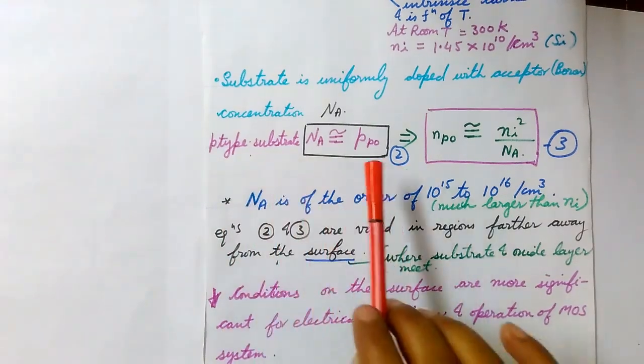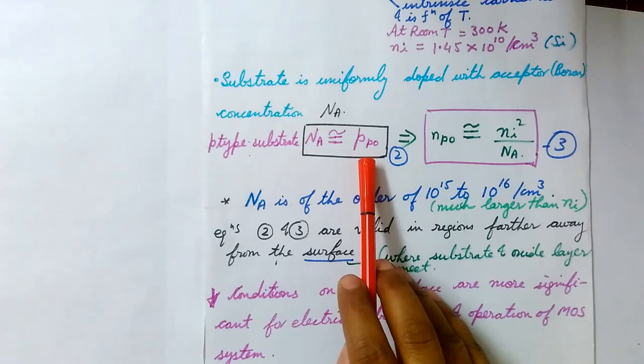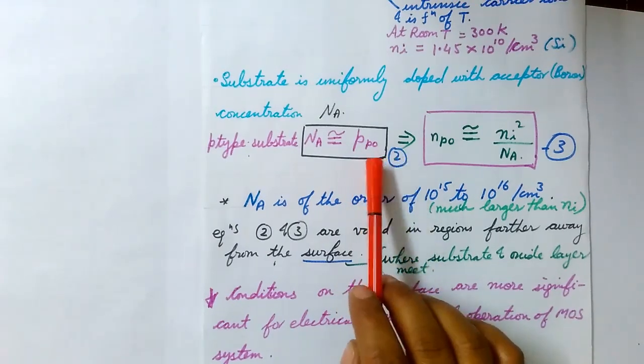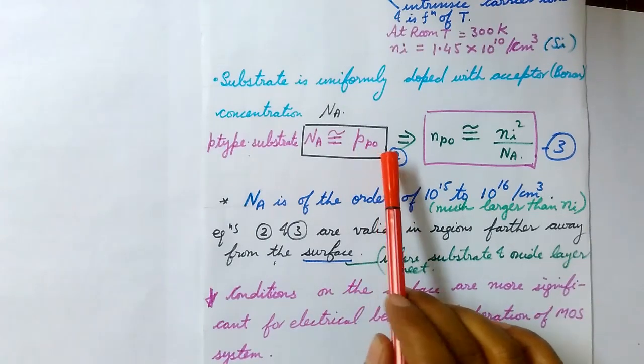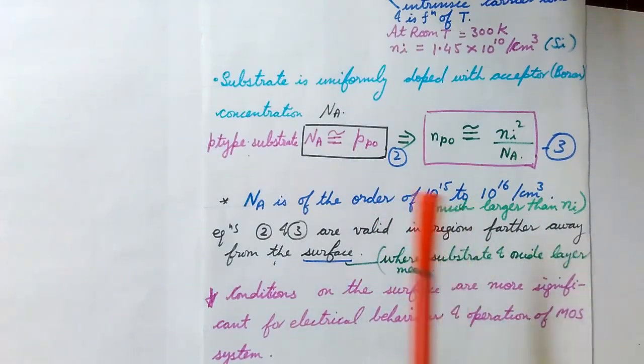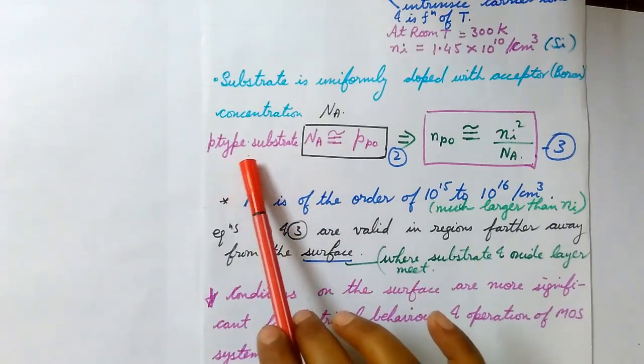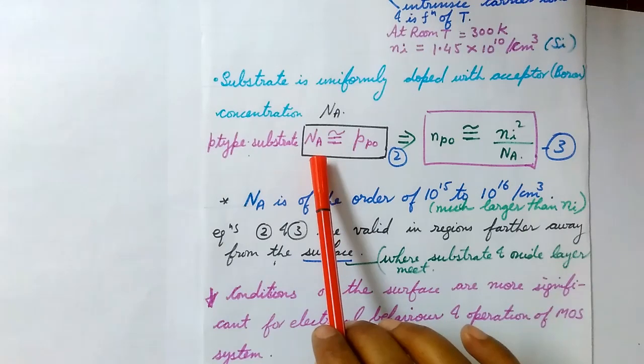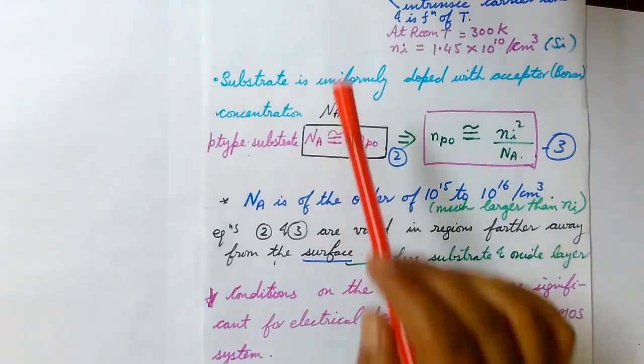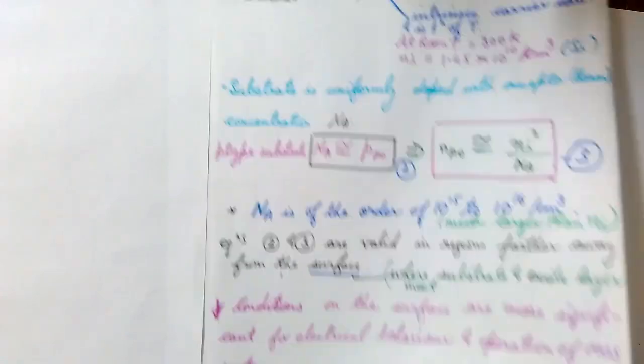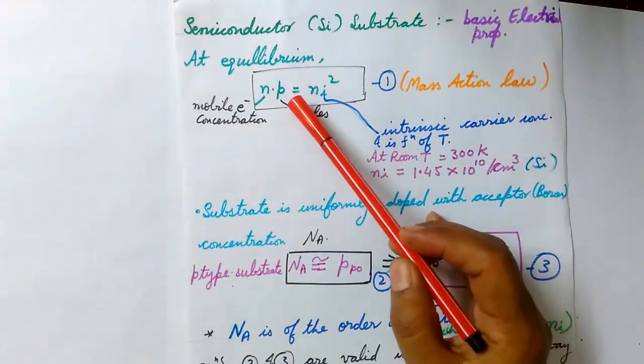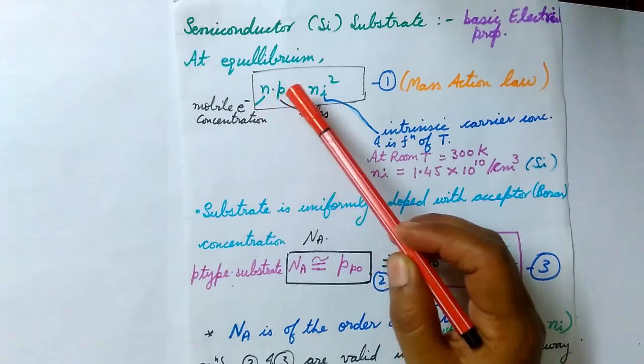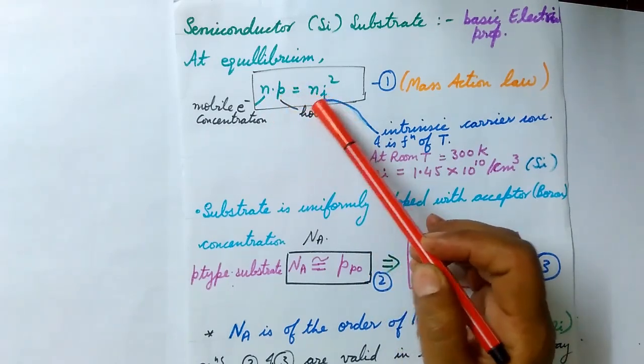For p-type substrate, the number of holes, which we have used the abbreviation p with suffix p0 (small p here we are using for the p-type), the number of holes is nearly equal to the acceptor atoms NA. By using the mass action law, that is np = ni², we know the value of p, so the number of electrons can be calculated: n = ni² / p.